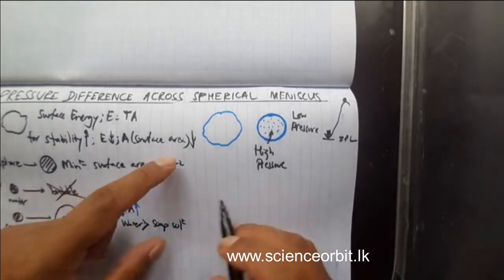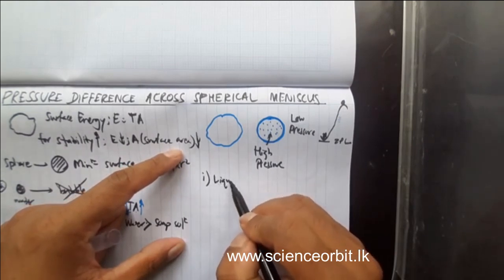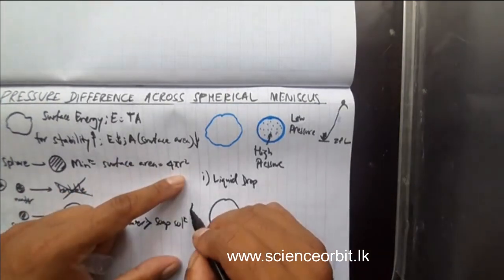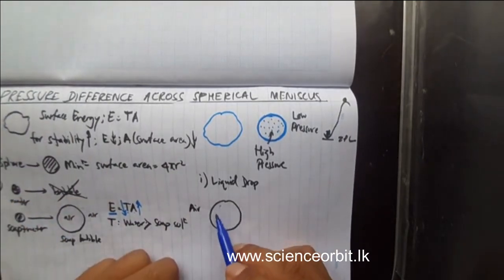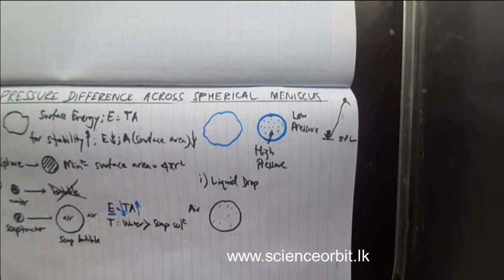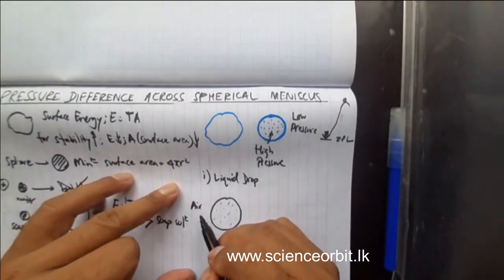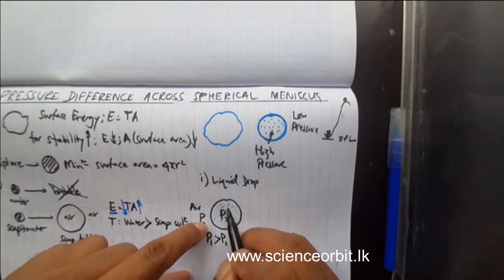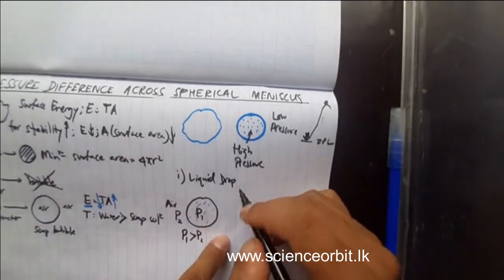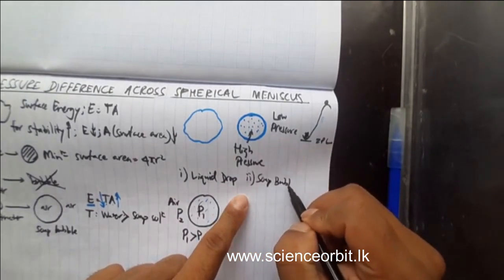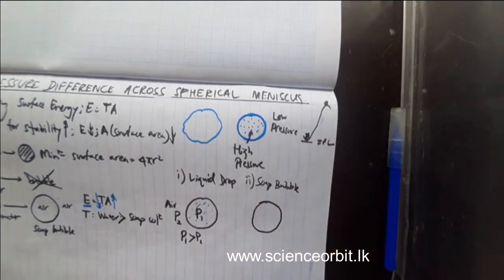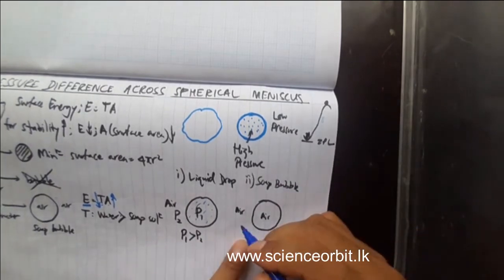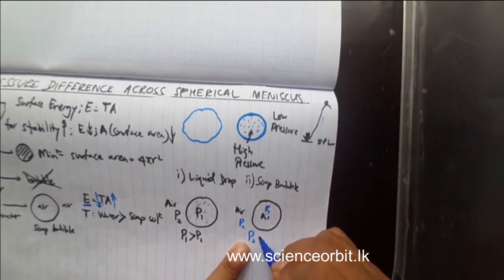We can compare this in different cases. Number one: a liquid drop. When you take a liquid drop, inside you have liquid and outside you have air. Outside there will be a pressure P2, and inside there will be a pressure P1. Definitely P1 will be larger than P2 because the molecules are contracted. Then you can compare a soap bubble — also a spherical shape — but here we have air outside and air inside. That does not mean the pressure is same. Outside it will be P2, inside it will be P1, and again P2 will be less than P1, because inside the air particles are contracted when the liquid surface was created.